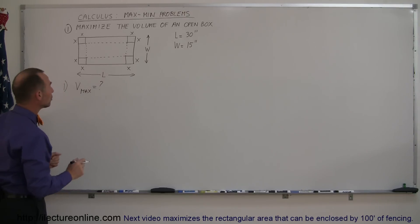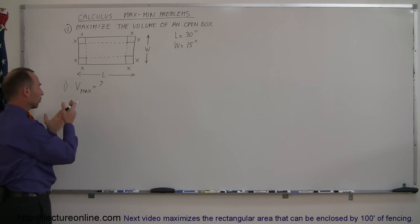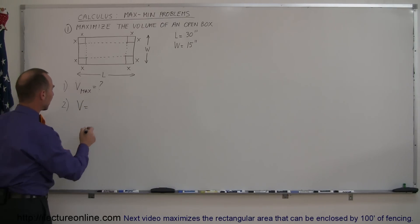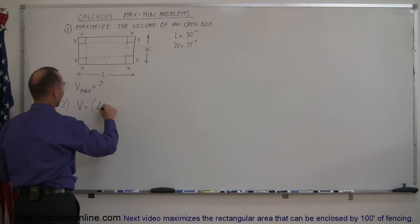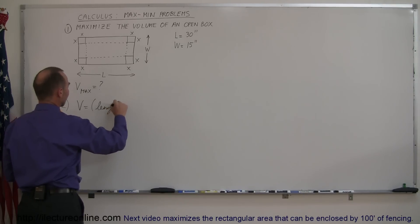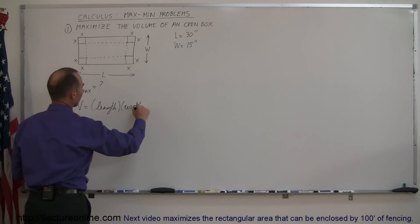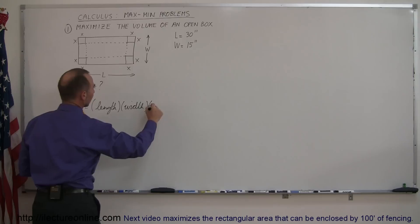The second thing we want to do is come up with an equation that describes the volume of that box. We're supposed to come up with an equation that describes what we're supposed to maximize, which is the volume. Volume equals the length times the width times the height. So volume of a rectangular box is the length times the width times the height.